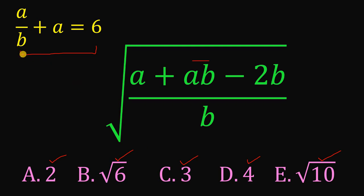Now, to answer this question, what we're going to do is to manipulate this given equation. We have a over b plus a equals 6. Now, let's multiply all of this term by b to eliminate the denominator b.